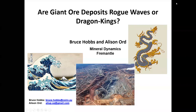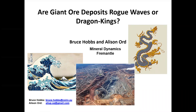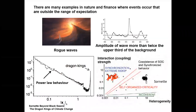The question is: are giant ore deposits rogue waves or dragon kings? There are many examples in nature, finance and elsewhere where events occur that are outside the range of expectation. One of these are rogue waves — giant waves at sea — where the amplitude of the wave is more than twice the upper third of the background.